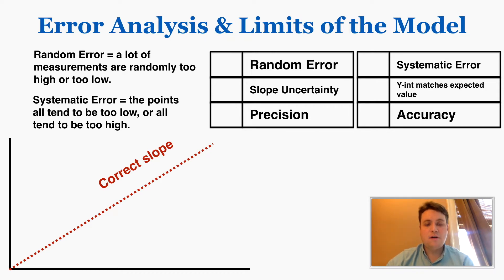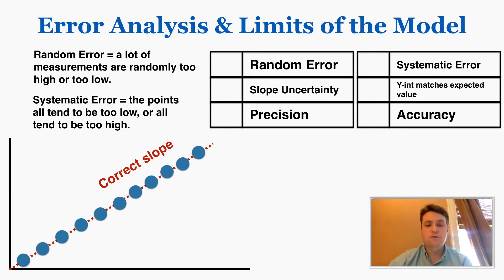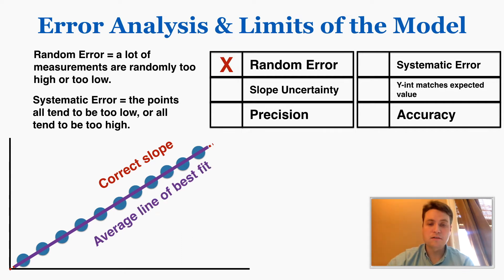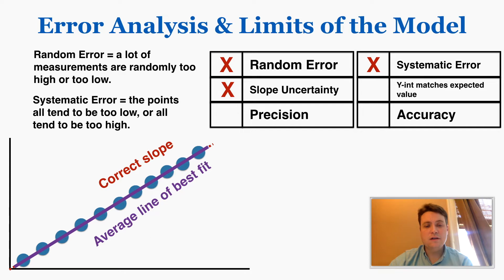Let's start with dots that are all basically on the correct spot. You took some measurements and they all line up with the actual true slope. When I draw this average line of best fit, you can see there's no random error — the dots aren't randomly too low or too high. There's no systematic error either because the points do not tend to be too low or too high. There's no slope uncertainty because there's no uncertainty about how steep or shallow the average line of best fit should be. There's not much room for it to be much bigger or smaller without missing a lot of the points.